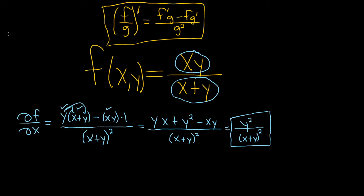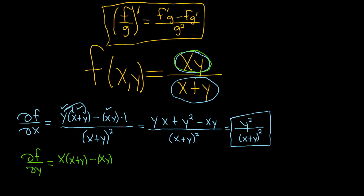Now let's find the partial derivative with respect to y, ∂f/∂y. When we do this, all of the x's are constant. Taking the derivative of the top: the derivative of y is 1, so we're left with x. It's the derivative of the top times the bottom (x + y), minus the top xy, times the derivative of the bottom with respect to y — the derivative of x is 0 and the derivative of y is 1 — all over (x + y) squared.